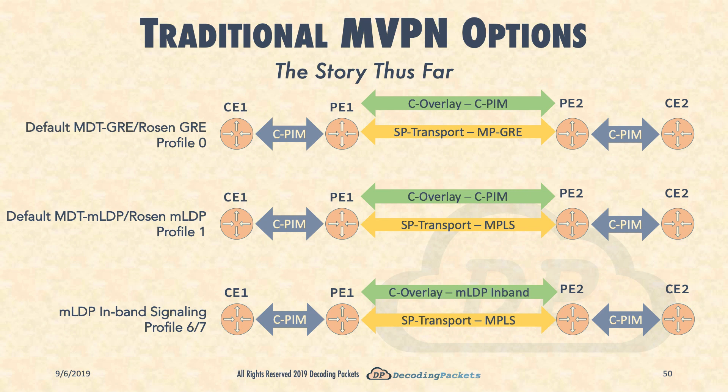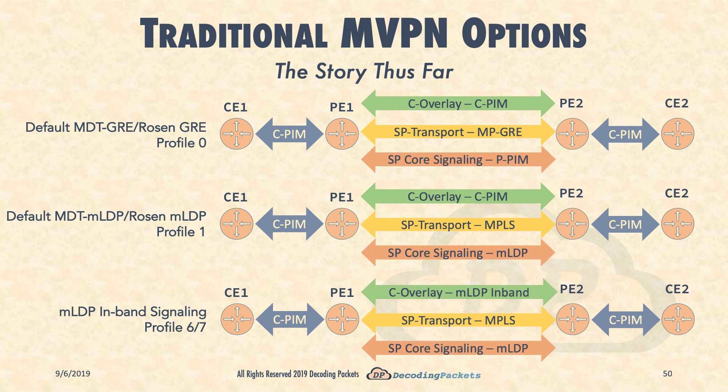Finally, the SP core trees responsible for multicast packet transport must themselves be signaled across the SP core. The IP-based trees in Profile 0 must be signaled via an IP multicast mechanism — via P-PIM, to distinguish the provider's PIM from the customer's C-PIM. For Profiles 1 and 6/7, core tree signaling is the responsibility of mLDP, or Multipoint Label Distribution Protocol.